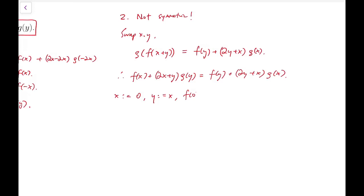x becomes 0, and y becomes x. So f(0) + (2·0+x)g(x) = f(x) + (2x+0)g(0), which simplifies to f(0) + xg(x) = f(x) + 2xg(0).